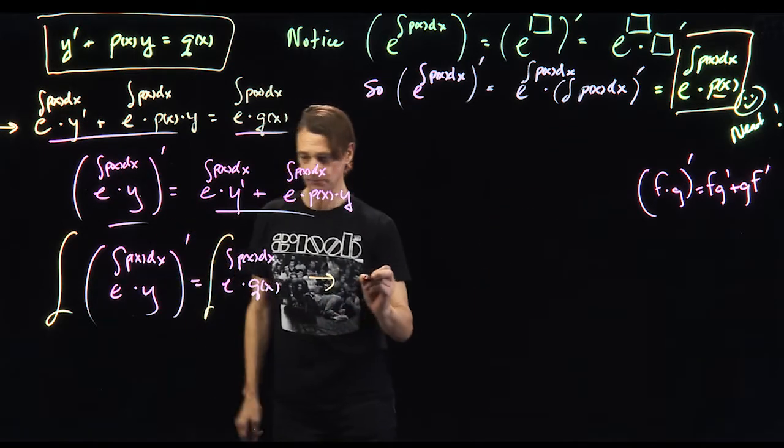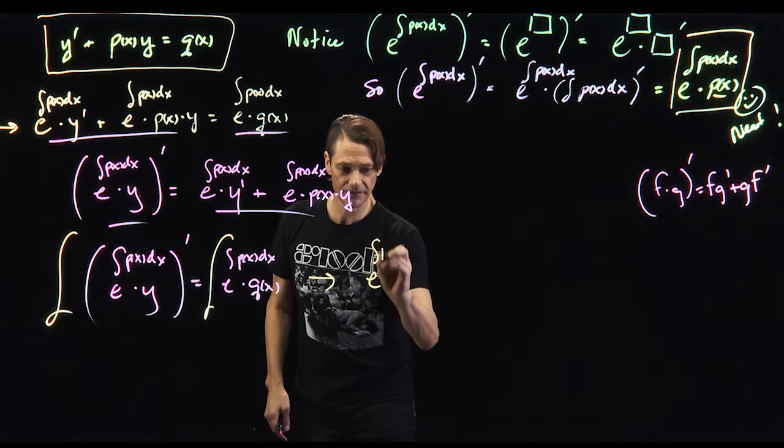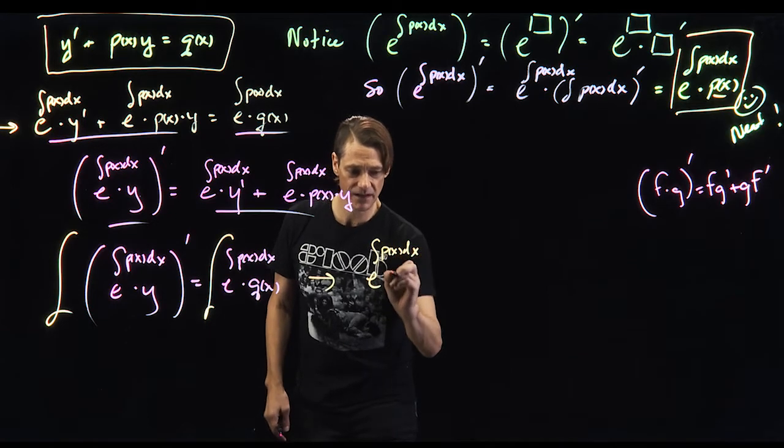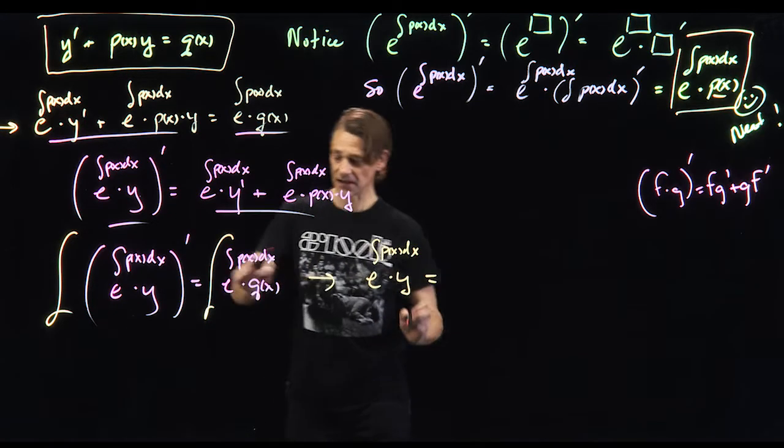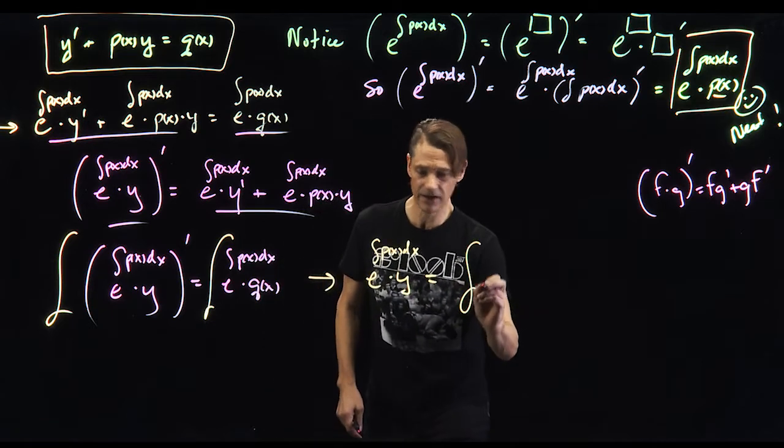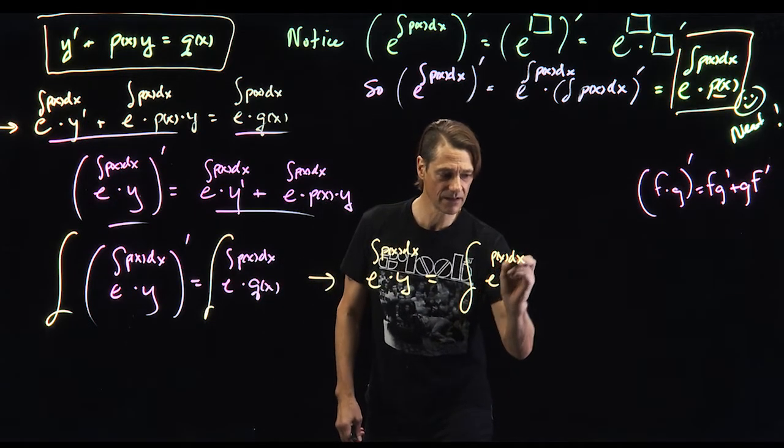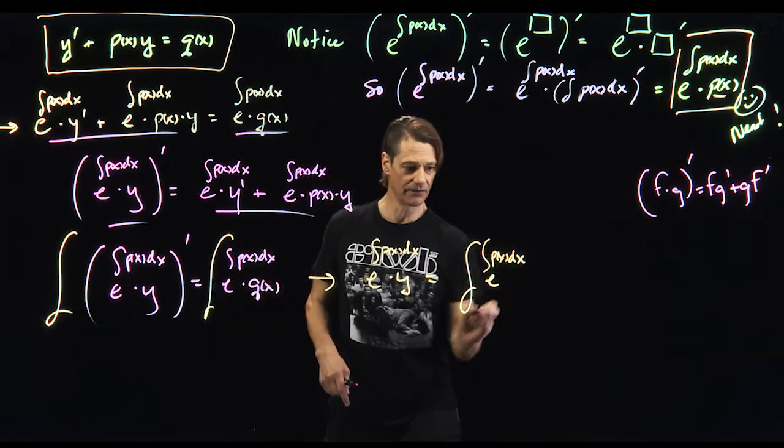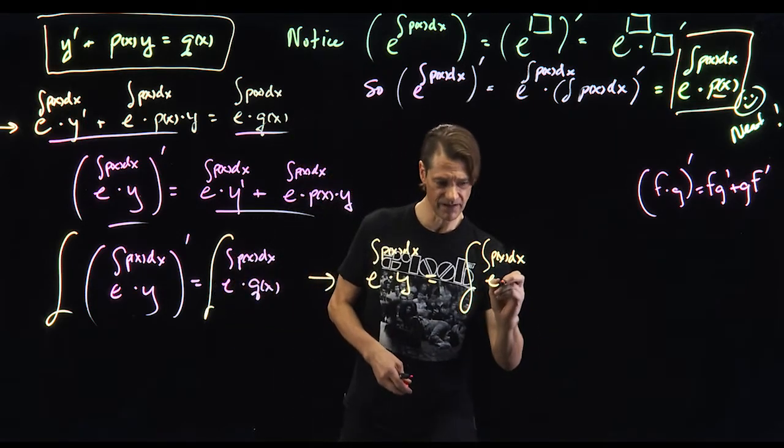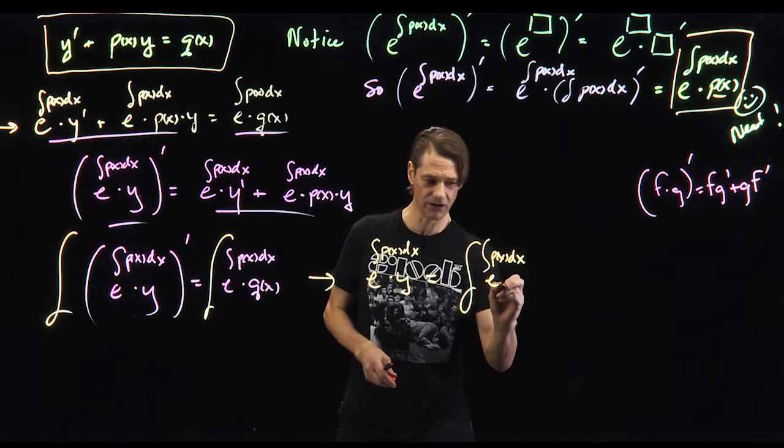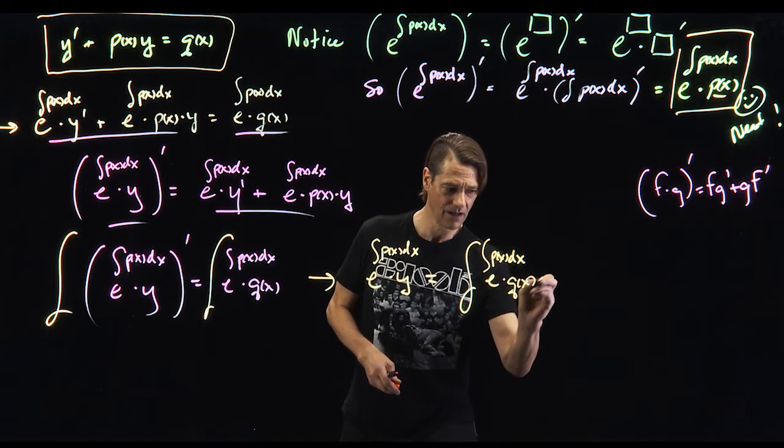So this is simply going to become e to the antiderivative of p of x dx times y. This is going to equal the antiderivative of e to the p of x dx, antiderivative, times q of x dx.